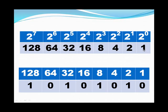The easiest way to remember is from right to left — you start with 1 on the right and each value doubles: 1, 2, 4, 8, 16, 32, 64, 128. So if we have the binary representation 10101010, the place values are 128, 64, 32, 16, 8, 4, 2, 1 from left to right.